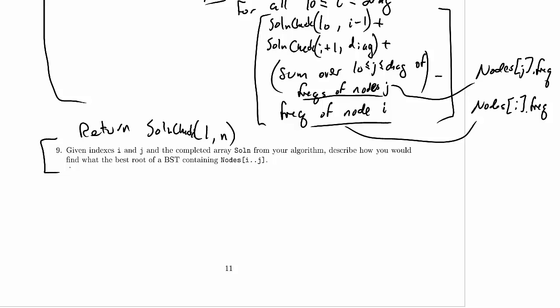Given indexes i and j and the complete array solution from our algorithm, describe how we would find the best root of a BST containing nodes i up to j. Now remember that our solution array does not tell us what the right node was to pick as the root. It just tells us what the minimum cost of this optimally arranged tree containing the nodes i through j would actually be.